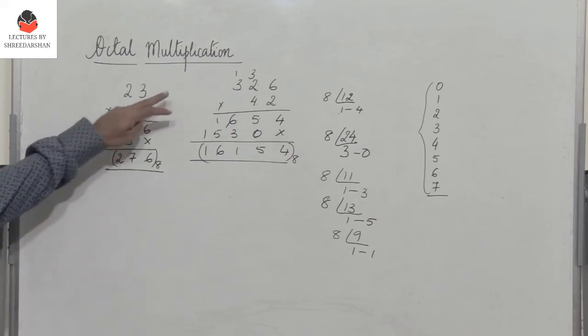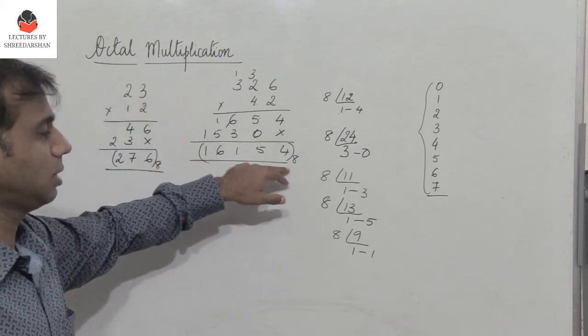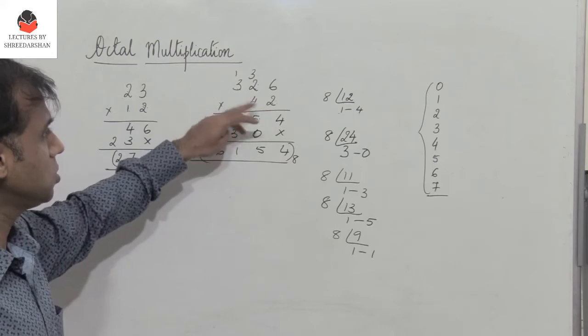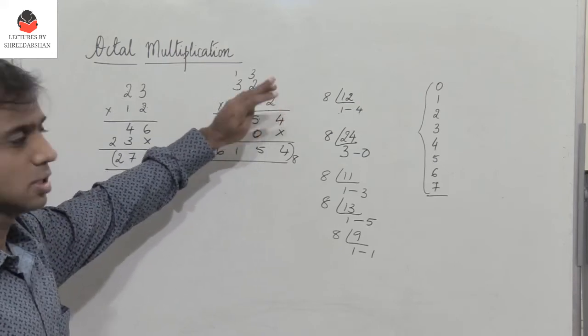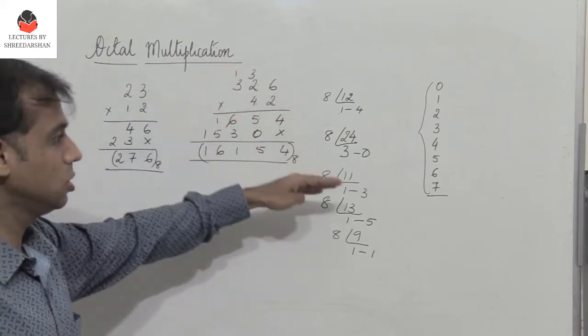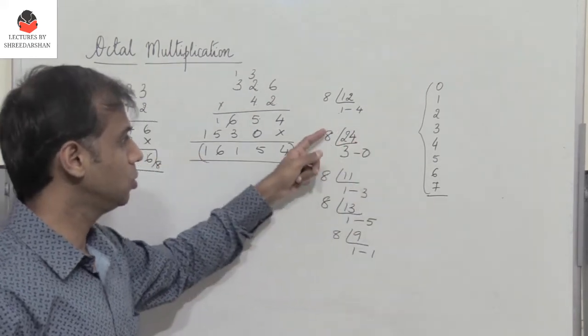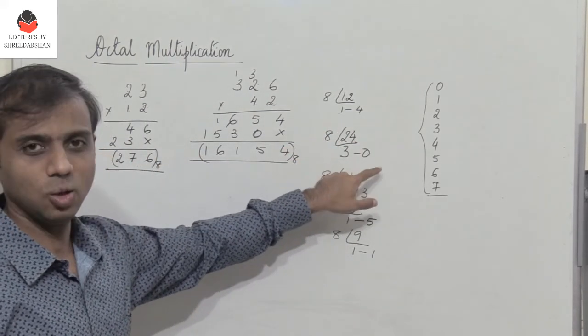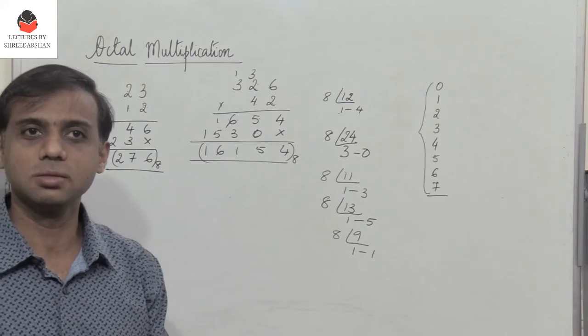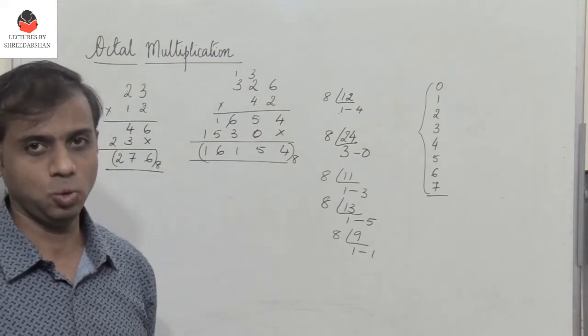So when you multiply the two numbers, this is how you perform octal multiplication. It's very simple. So remember that when you multiply the two numbers, if the number goes beyond 7, what do you do? You divide it by 8, get the octal representation and perform multiplication the way you always have been doing.